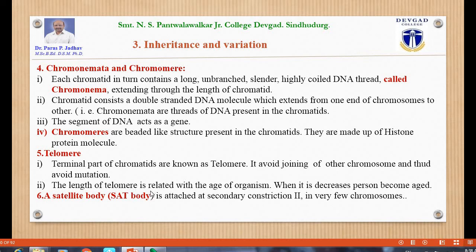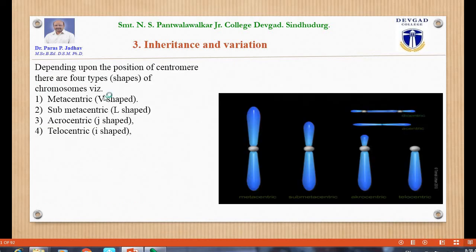The satellite body attaches at the secondary constriction in very few chromosomes. Depending upon the position of the centromere, there are four types of chromosomes. Metacentric: when the centromere is present at the center, the chromosome is V-shaped. Submetacentric: when the centromere is present just away from the center, the chromosome is L-shaped.